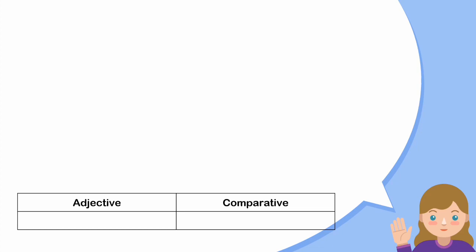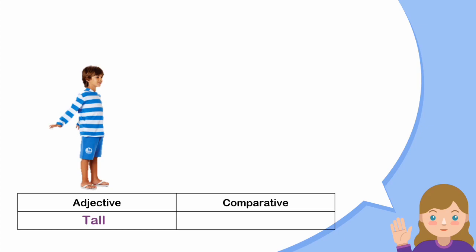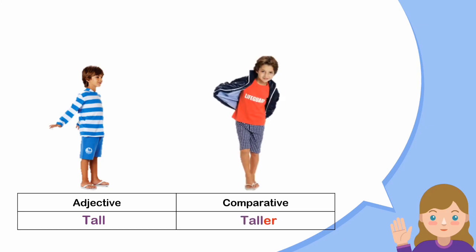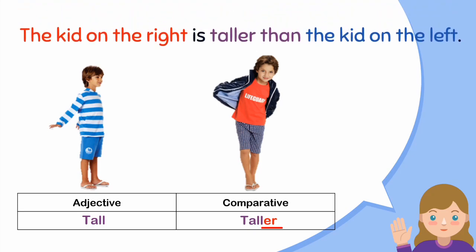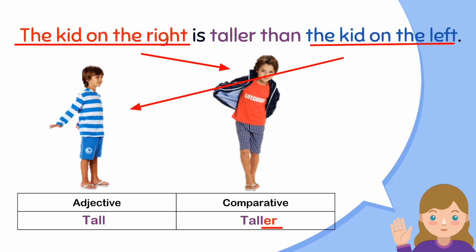Misalnya kata sifatnya adalah 'tall' (tinggi), kata perbandingannya adalah 'taller' (lebih tinggi). Biasanya adjective comparative hanya tinggal ditambahkan -er di belakang katanya, tetapi tidak semua adjective ditambahkan -er. Untuk 'tall' kita rubah menjadi 'taller'. Contoh kalimatnya: The kid on the right is taller than the kid on the left. Jadi kalau kita mau menggunakan comparative adjective, kita menggunakan 'than'.